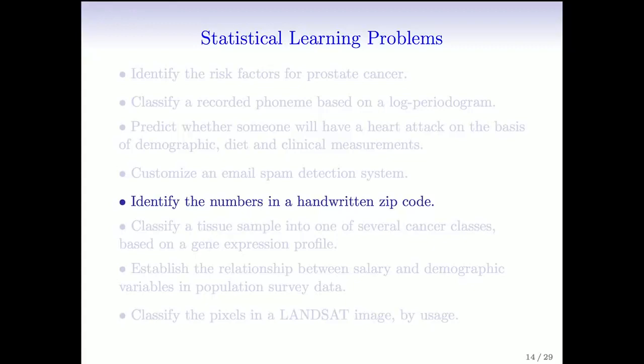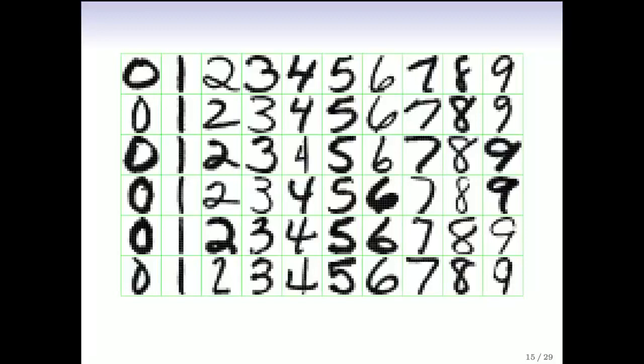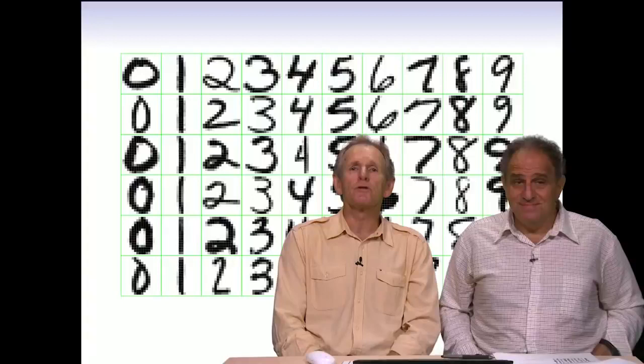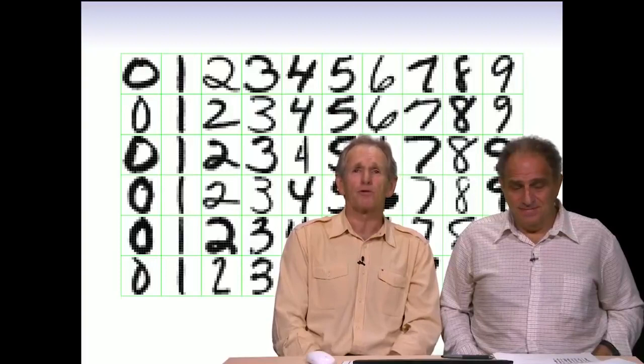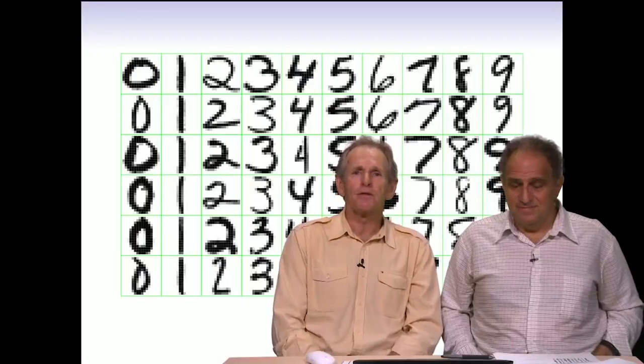The next example: identify the numbers in a handwritten zip code. Here are some handwritten digits taken from envelopes, and the goal is, based on an image of any of these digits, to classify into the 10 digit classes. To humans this looks like a pretty easy task — we're pretty good at pattern recognition. But it turns out it's a notoriously difficult task for computers, though they're getting better and better all the time.